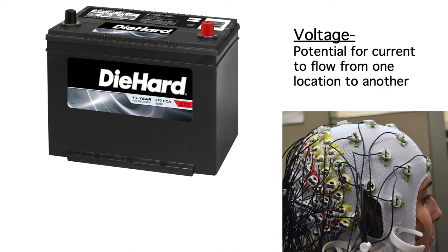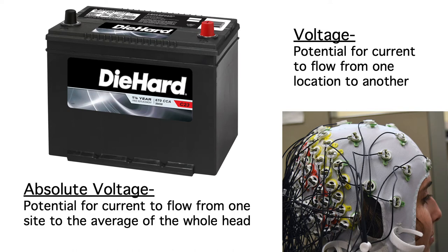However, there's a way to think informally about the voltage at a single electrode site, which we call the absolute voltage at that site. Specifically, the absolute voltage at an electrode site is the potential for current to flow between that site and the average of the entire rest of the head.